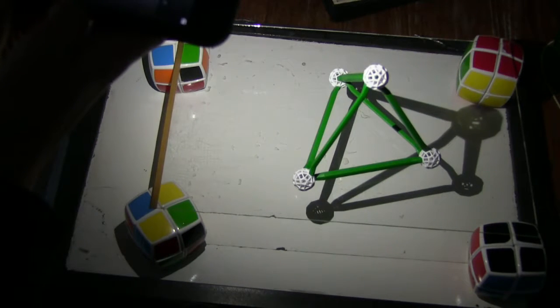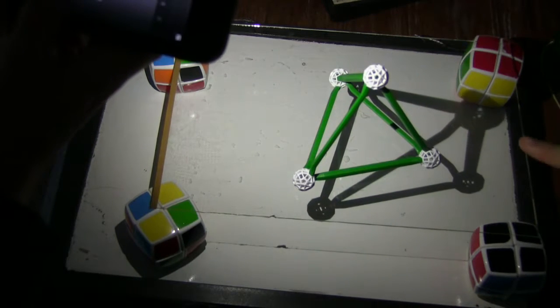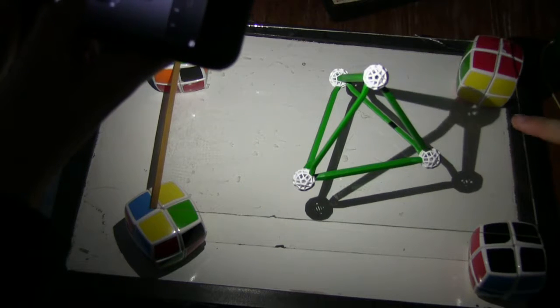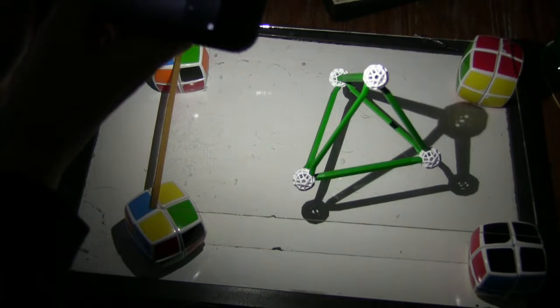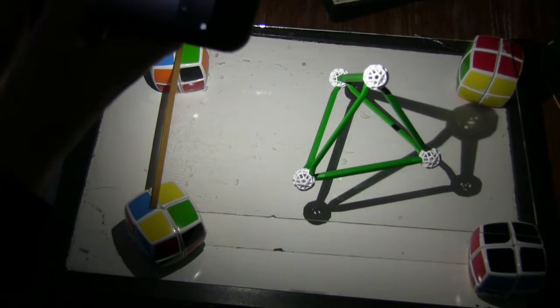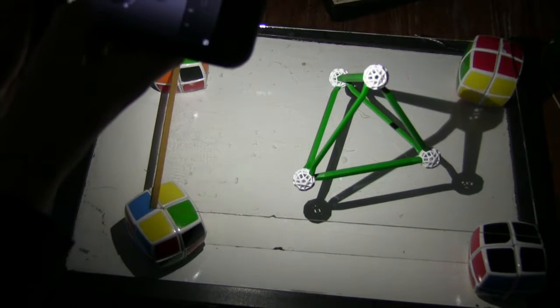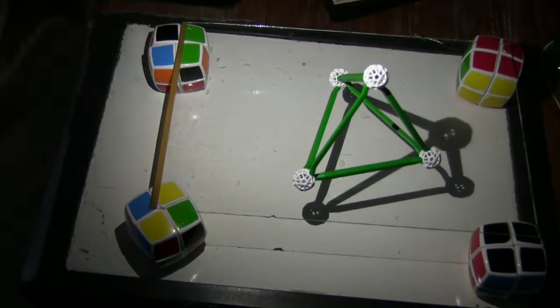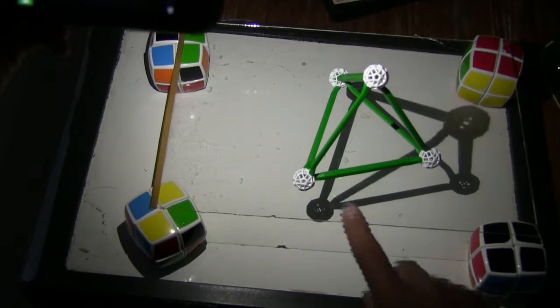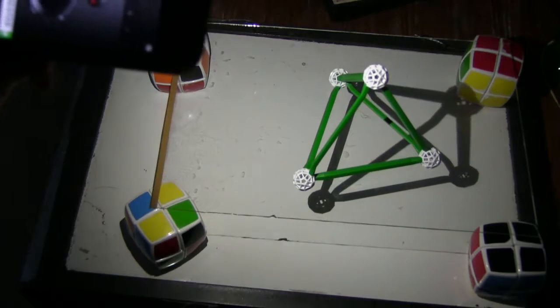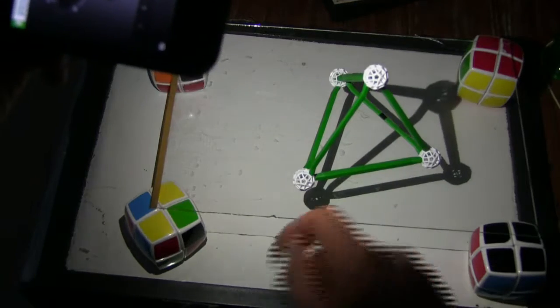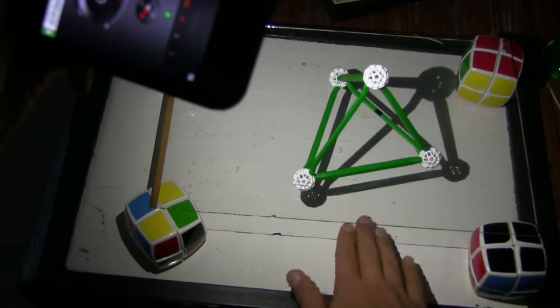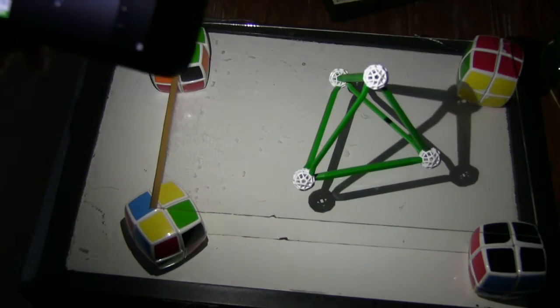If two lines cross in the shadow, does that mean they cross in the object? No. It doesn't mean they intersect. Why not? Why do you think that happens? Because it's just, you're messing it up because you have to project it to a lower dimension.